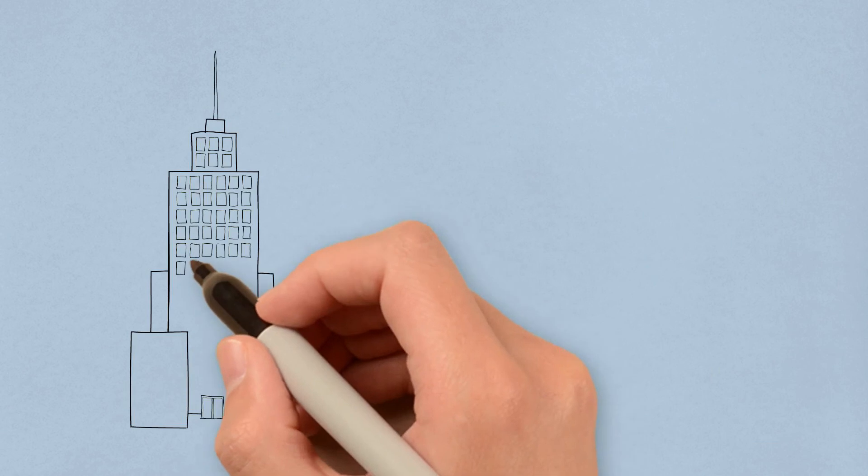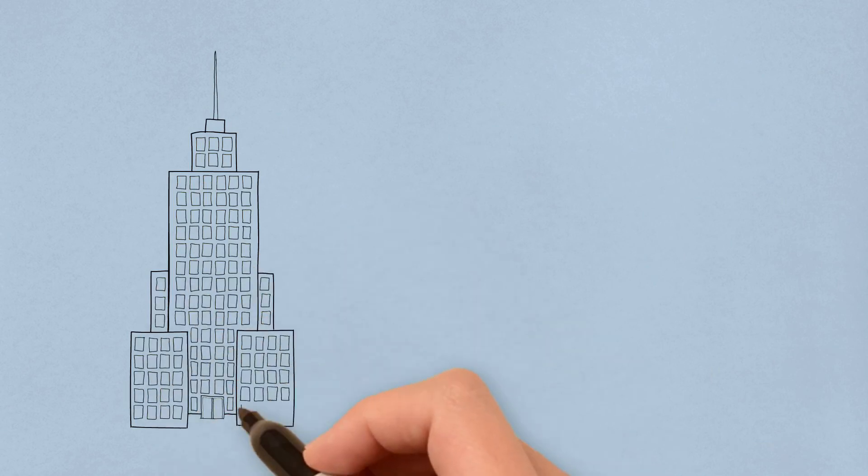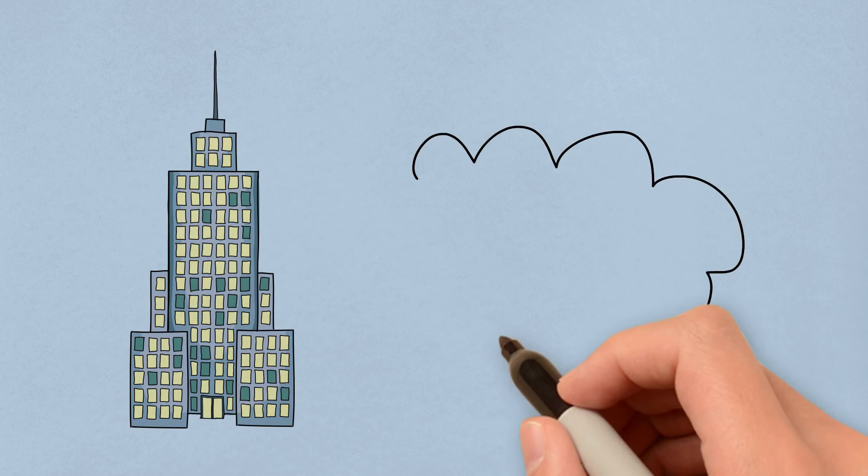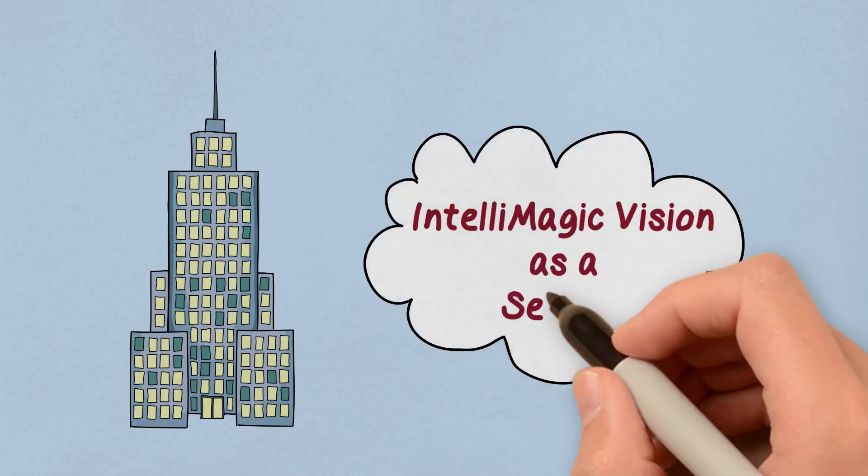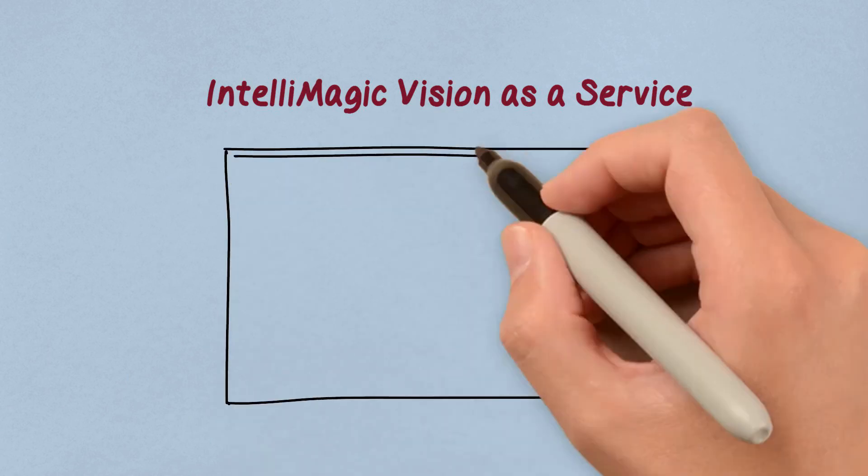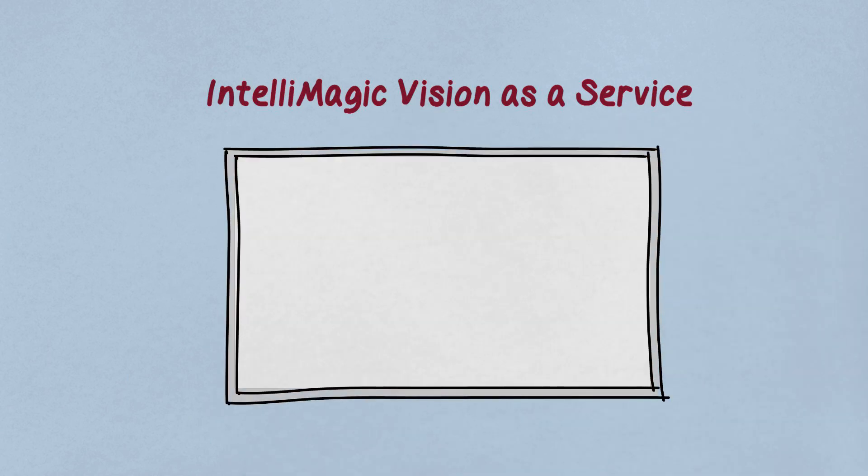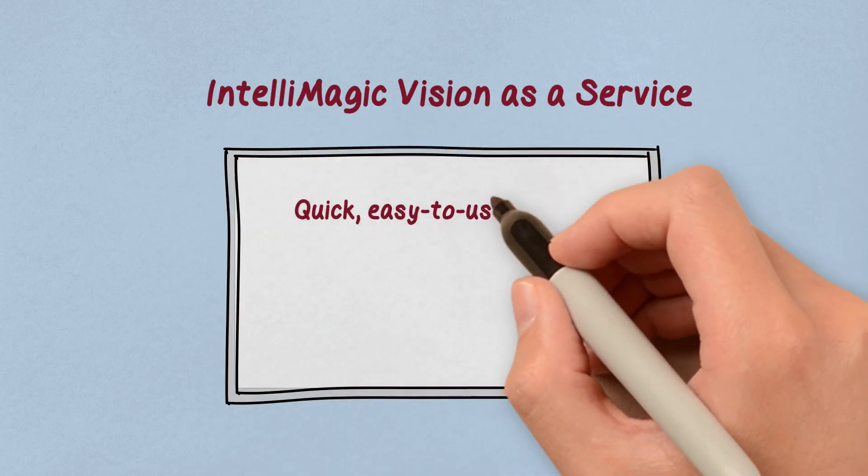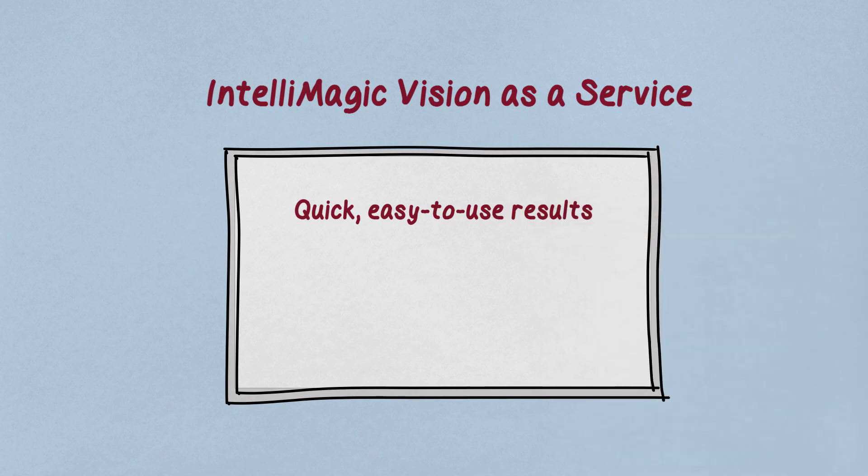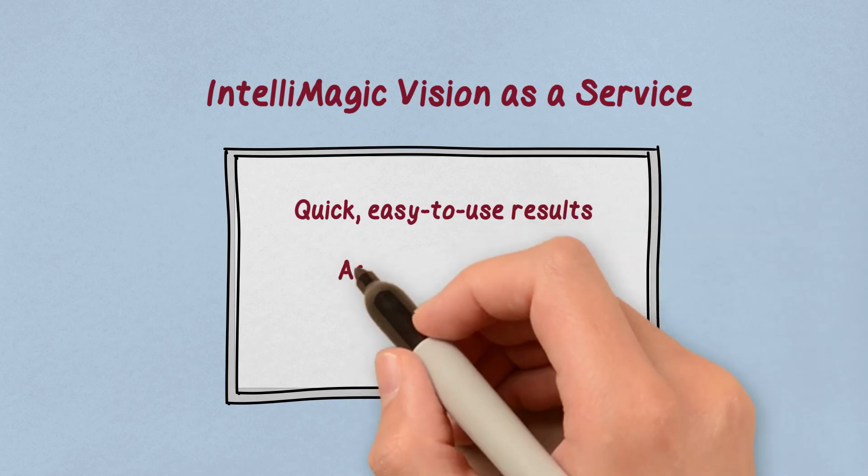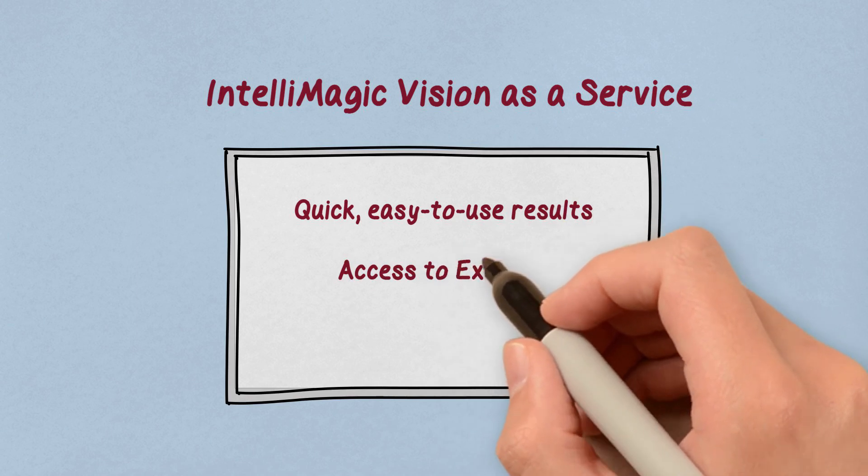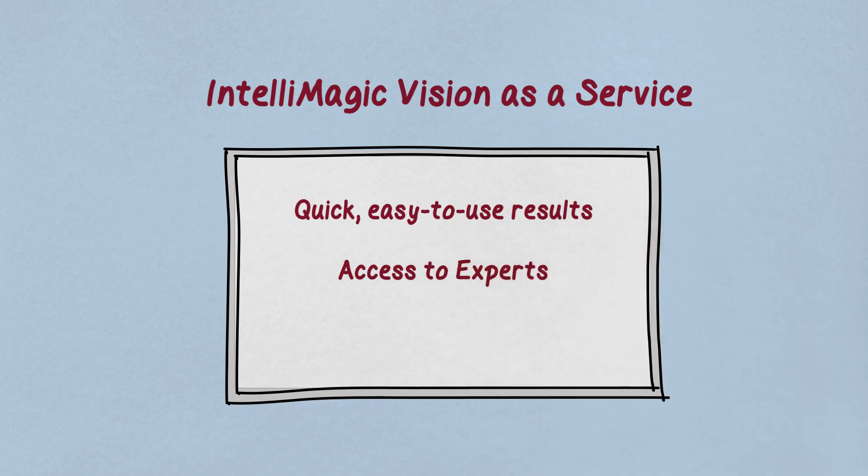You can install our software on-site, but this problem of how to generate valuable intelligence out of the data is one that lends itself very well to the software-as-a-service model. In as little as 24 hours after starting to send us your data, you can start receiving valuable intelligence about specific threats to availability in your infrastructure. And this services option also gives you access to deep experts to consult with you about risks and remediation strategies.